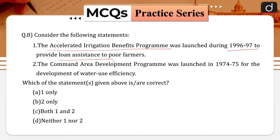Second, the Command Area Development Program was launched in 1974-75 for the development of water use efficiency. Which of the statements is/are correct? One only, two only, both one and two, or neither one nor two? Correct answer is option B, that is two only.